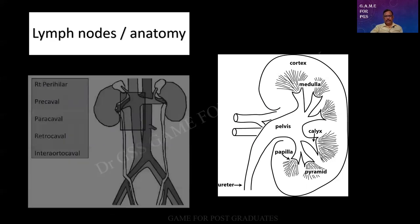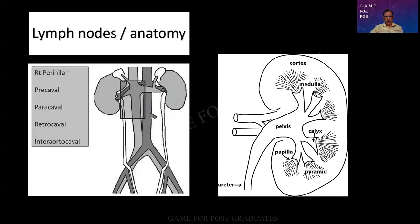Also, the lymph nodes. Generally we will be getting a specimen and in any tumor they will be asking you what are the routes of spread and what are the lymph nodes to be studied. In this case it can be perihilar, precaval, paracaval, retrocaval, and interaortocaval. There are so many groups of lymph nodes — just memorize them.